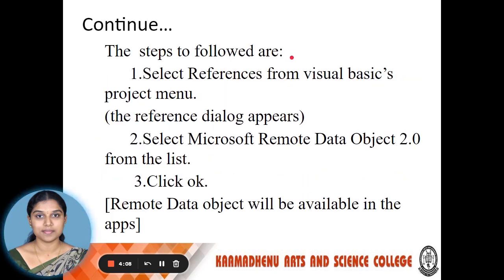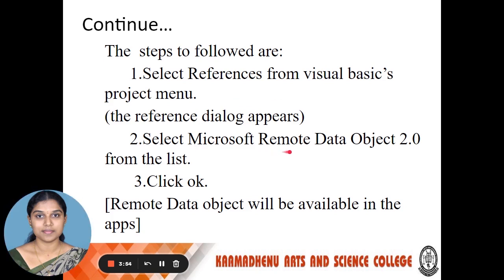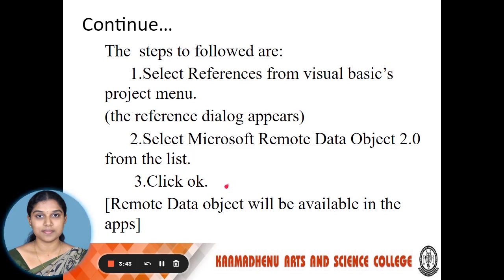The steps to be followed for creating an RDO connection: First, select References from the Visual Basic Project menu. A dialog box will appear — select Microsoft Remote Data Object 2.0 from the list. Then click OK. After that, the Remote Data Object will be available in the application.